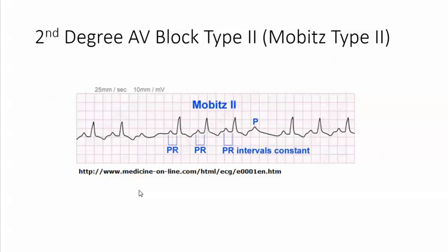In this rhythm strip, the first thing we're going to do is look at the P waves. You notice the P waves occur in a regular rhythm. Now, not necessarily does the impulse conducted in the SA node make it all the way to the ventricles. When that happens, you have a P wave and no QRS — so some P waves do not have a QRS. The atrial rate is 94 beats per minute and it's a regular rhythm.